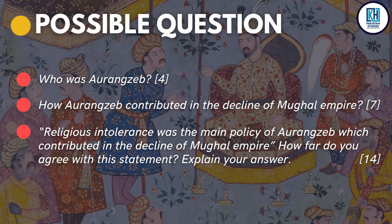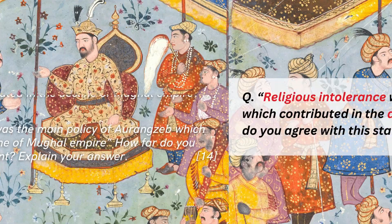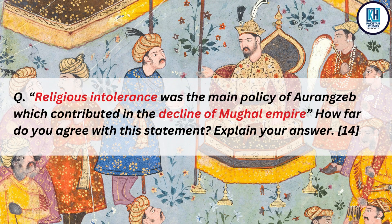So here we go. We will start by examining how Aurangzeb's policies contributed to the decline, and convert this into a 14-mark answer. Our main question is: 'Religious intolerance was the main policy of Aurangzeb which contributed in the decline of the Mughal Empire. How far do you agree with this statement? Explain your answer.' There are two things to target in a 14-mark question: number one, the examiner's statement — the factor given by the examiner — and number two, the main concern of the question.